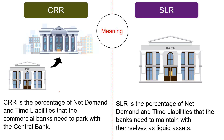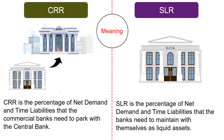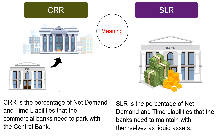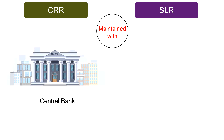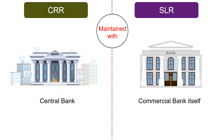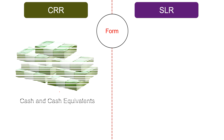Moving on to the differences between CRR and SLR. In terms of meaning, CRR is the percentage of net demand and time liabilities which commercial banks need to park with the central bank. On the contrary, SLR or Statutory Liquidity Ratio is the percentage of net demand and time liabilities which banks need to maintain themselves in the form of liquid assets at any point in time. While CRR is maintained with the central bank i.e. the Reserve Bank of India, SLR is to be maintained by the banks themselves.